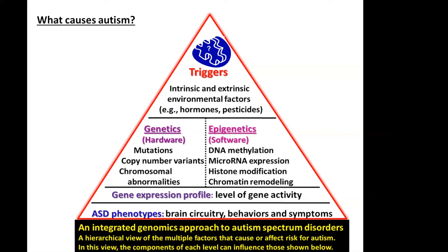At the very base of the pyramid, I put the phenotypes — these are the observables — but each higher level of the pyramid controls everything below it. Within our studies, we look at first gene expression profiles, which I think is the most immediate determinant of phenotypes. Above that, side-by-side, we look at both genetics and epigenetics: the hardware, which is the DNA sequences, and the software, which is the mechanisms of gene regulation. At the very top of this pyramid, I put the environmental factors — both intrinsic factors such as hormones or inflammation, and environmental factors such as pesticides — and this top level is what we know very little about.